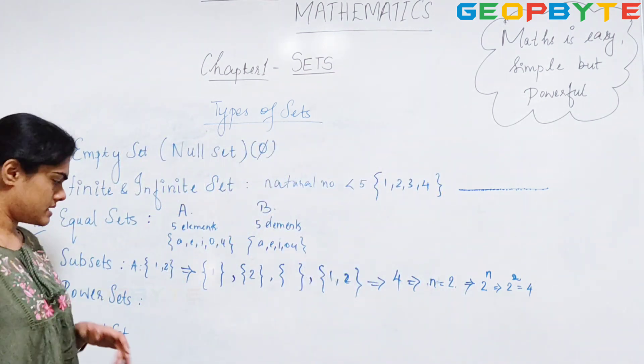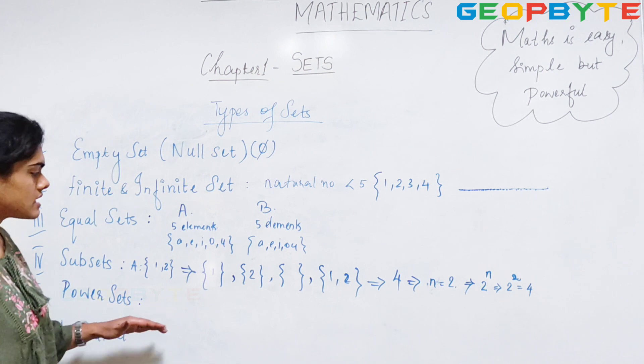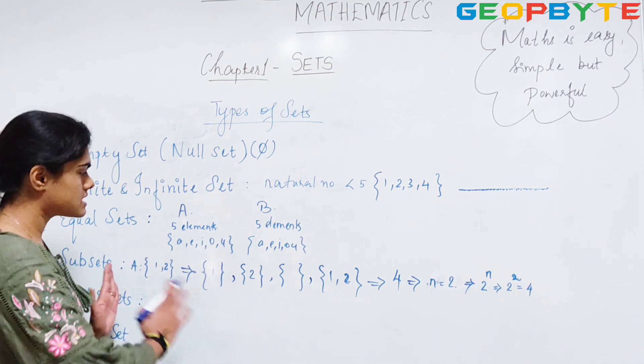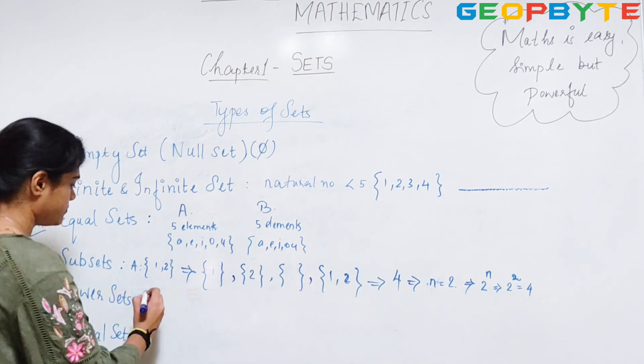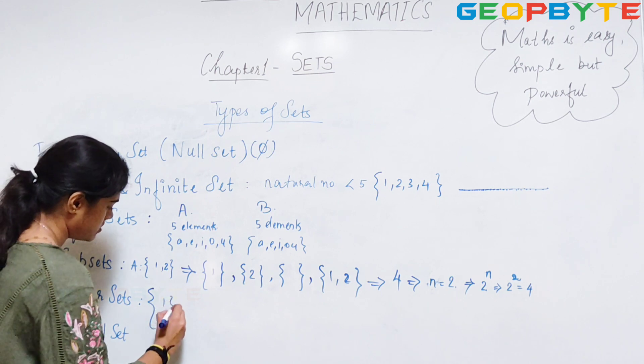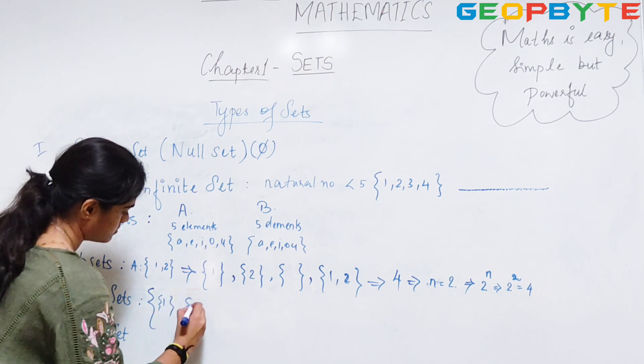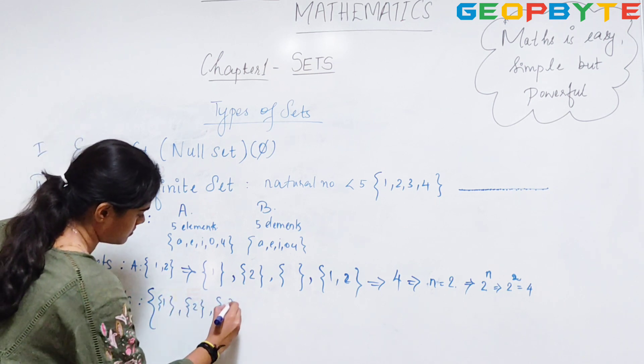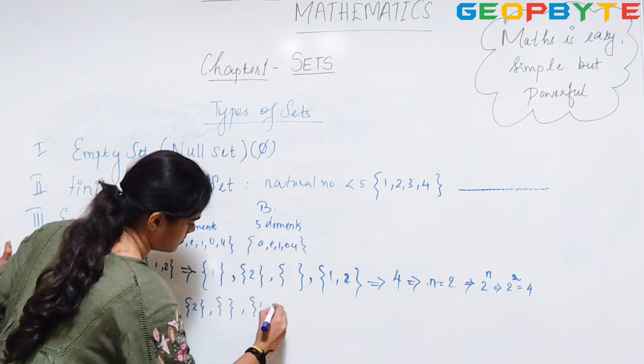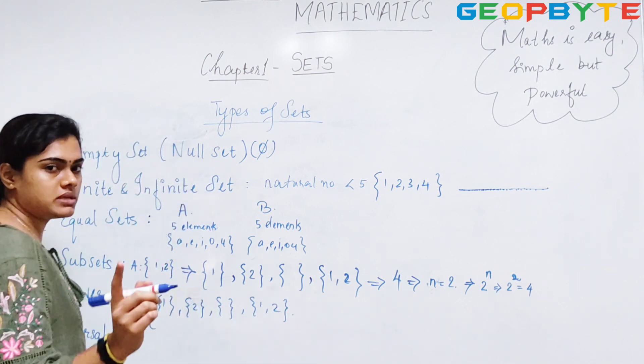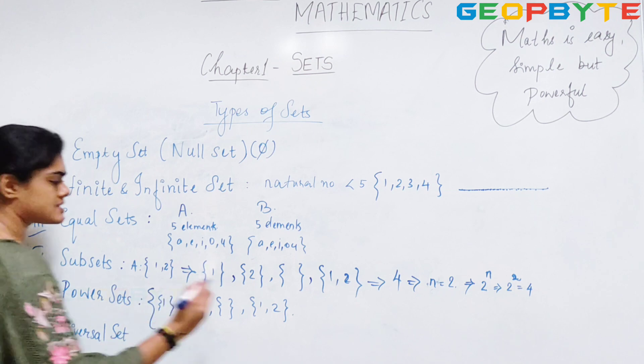What is a power set? Power set is a set which contains all the subsets. Even if it is missing 1 subset, then it is not a power set. It should contain all the 4 subsets.